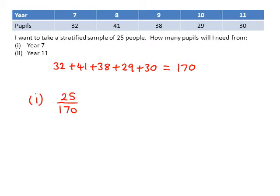So we want to take a stratified sample of 25 people out of a possible 170. So that makes the fraction 25 out of 170. The next thing is that we want to take the sample from year 7. And there are 32 students in year 7. So it's our fraction times 32.